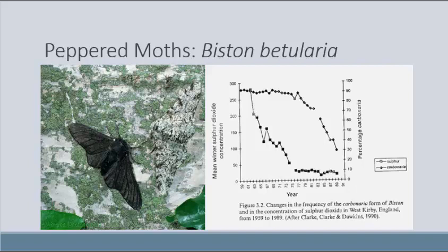The pale moths became easy targets for predators on the sooty dark trees, so over the course of the industrial revolution the entire population was naturally selected to shift toward the darker color. On the right-hand side we see the cleaning up of the environment in West Kirby, England. As the trees and lichens shifted back to white, the dark carbonaria form of the moths declined drastically because they again became easy prey — an excellent example of natural selection in action happening very quickly.